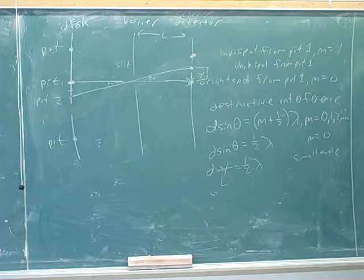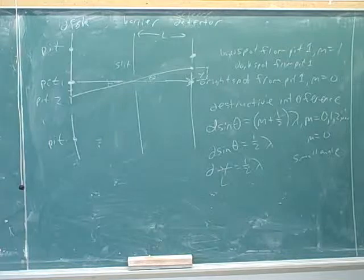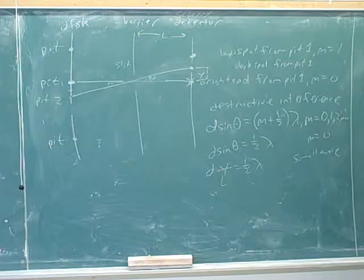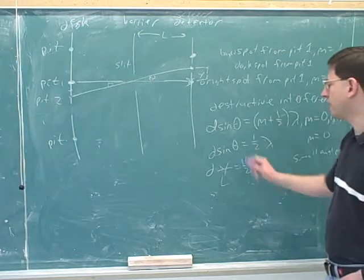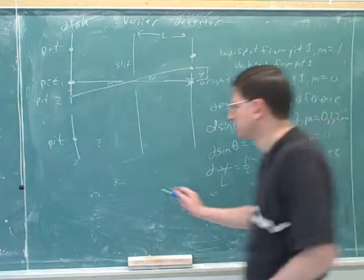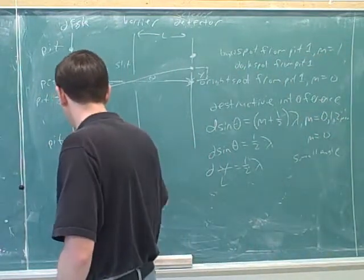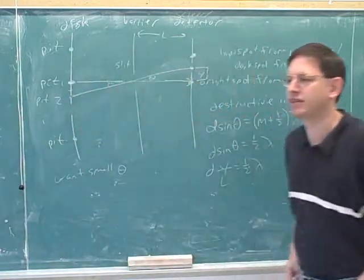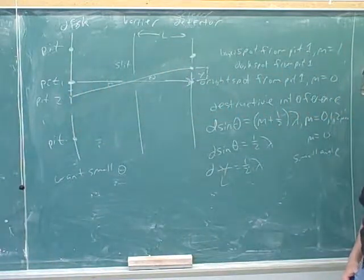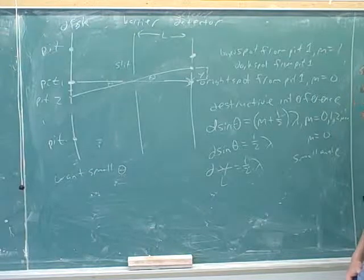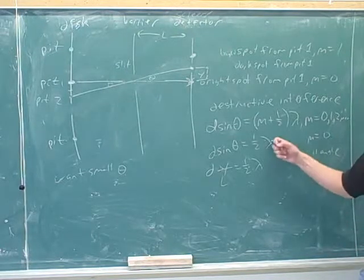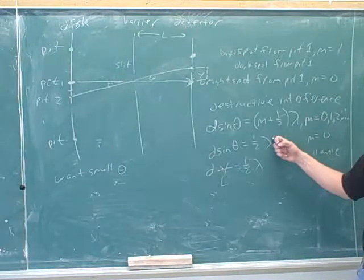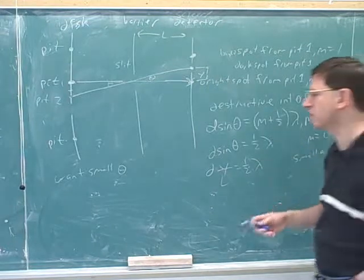So how do we use this to solve problems? What do we want? Would we like theta to be big or small? Small. So what type of light should our DVD player use? Low wavelength. That's the most important point to get from this whole discussion here. We want a small wavelength.